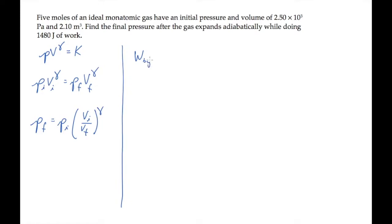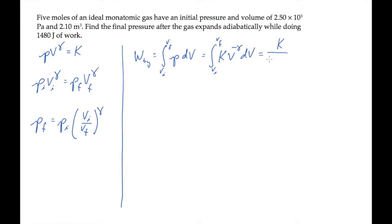The work done by the gas is the integral of the pressure over the volume. For an adiabatic process, that pressure from the first equation is the constant K over V to the gamma. Integrating this function gives K over 1 minus gamma times V to the power of 1 minus gamma, evaluated at the limits.